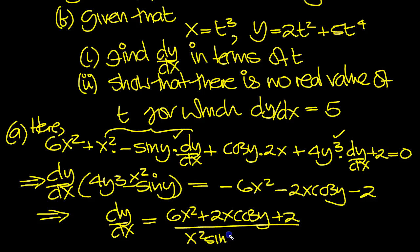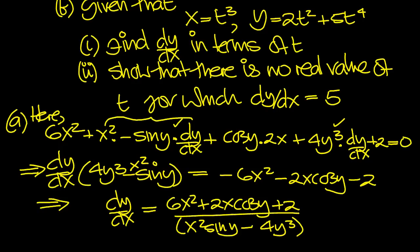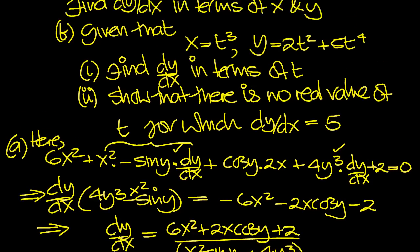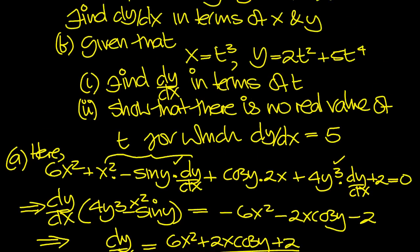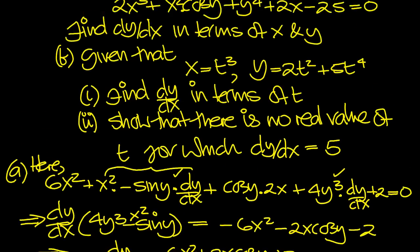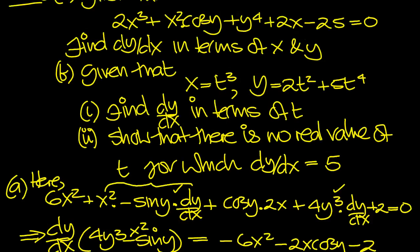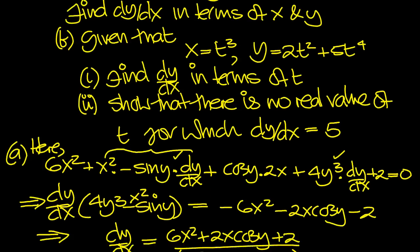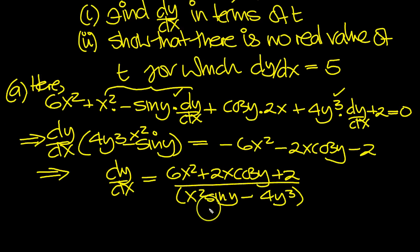So I'm going to write the second term first, x squared sine y and flip the sine of course, and then the first term second, minus 4y cubed. So that's what we've got. It doesn't look as though it simplifies much further. So that's dy/dx for part a in terms of x and y. We could take a 2 out of this, but it's a marginal improvement.